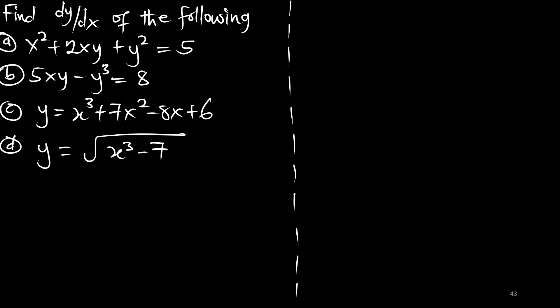In this episode we are going to find the derivative of the following functions. Starting with part A, we can see that we have a combination of x and y, which makes it an implicit function.